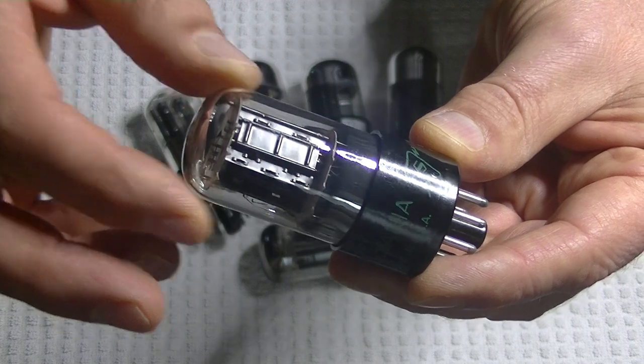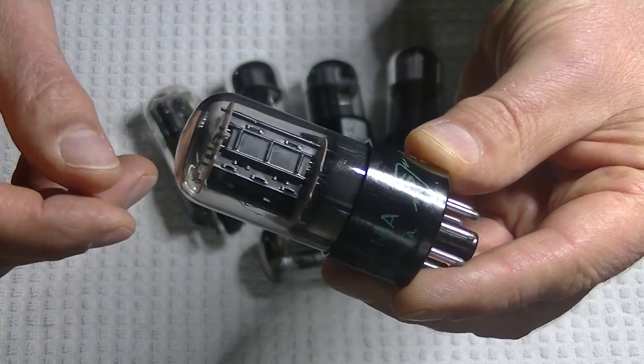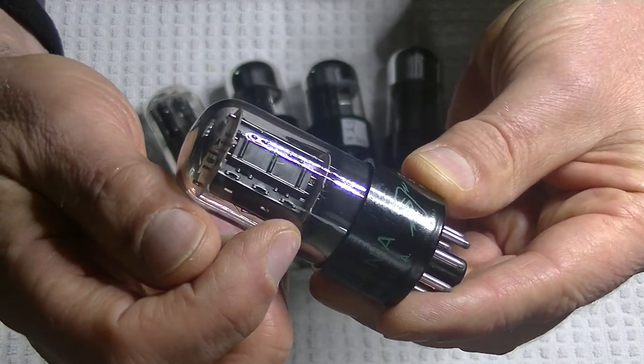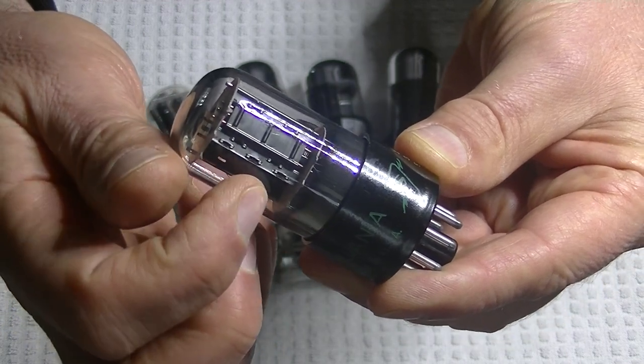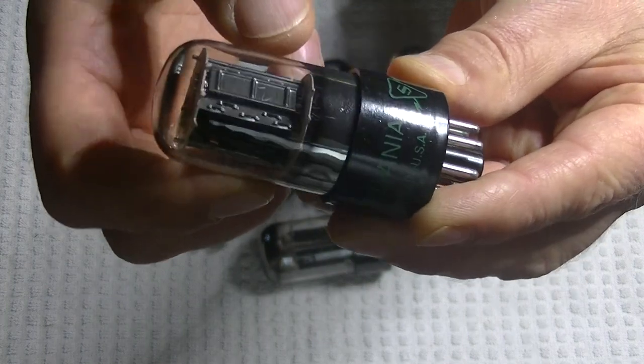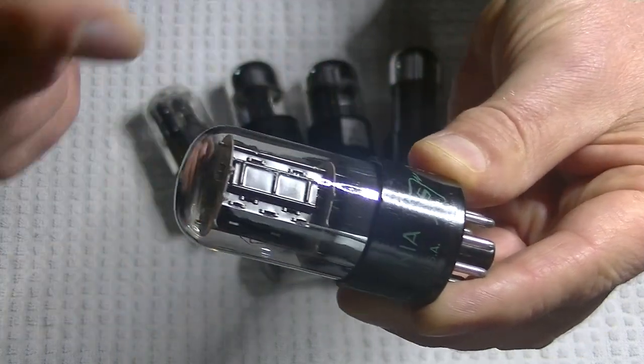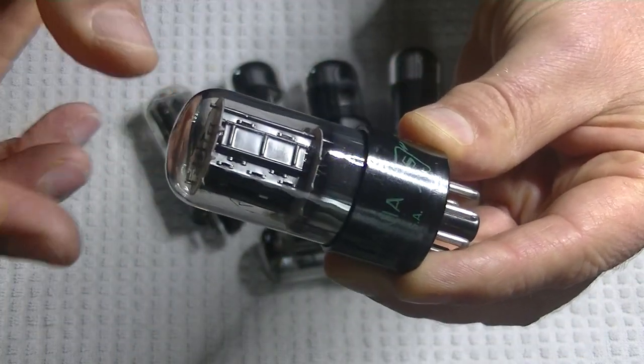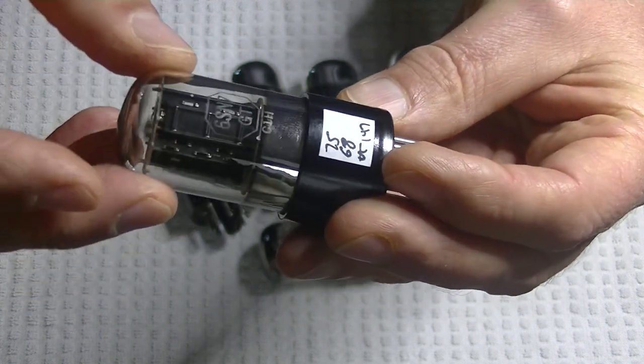But there's a difference that makes it easy to identify the rebrands. Take a look at the rivets. There's five rivets on one side, and two, only two, on the other side. And of course, these are twin triodes, right? Two tubes in one envelope. So, the other side's identical.